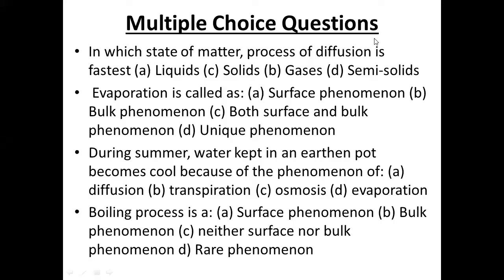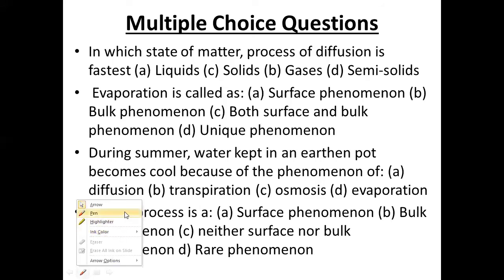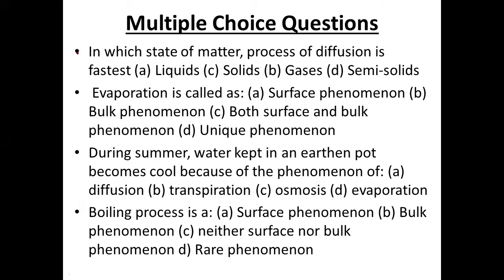Now we are going to discuss objective questions of the chapter 'Matter in Our Surroundings.' First MCQ: in which state of matter is the process of diffusion the fastest? Options: liquid, solid, gases, or semi-solid. The answer is: in gases, the process of diffusion is the fastest.